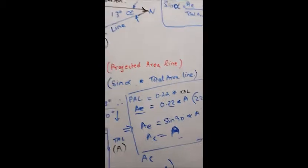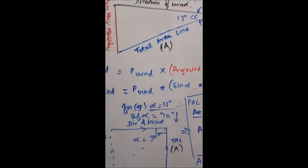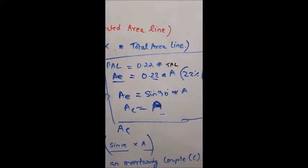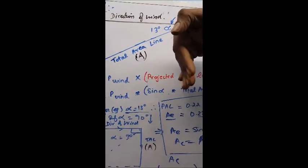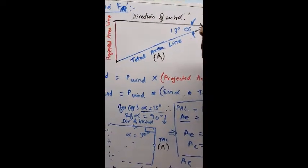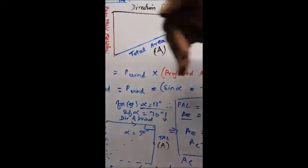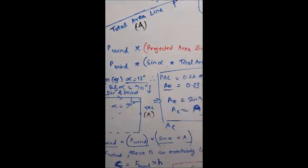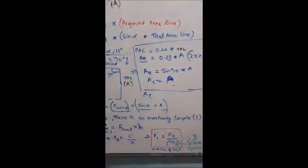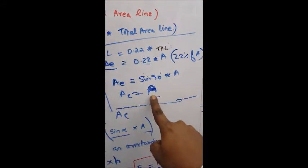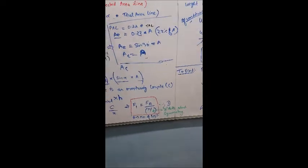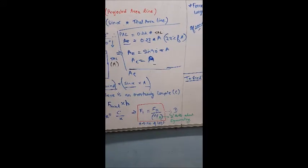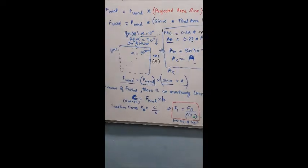If you closely observe this formula, it makes sense. Suppose the panels were perpendicular to the direction of the wind — then the pressure on the exposed area equals the pressure of the wind directly. That is because sine 90° equals 1, so the area of exposure equals the full panel area. Since the panel is inclined, we find the actual exposed area by multiplying by sine alpha, the projection.